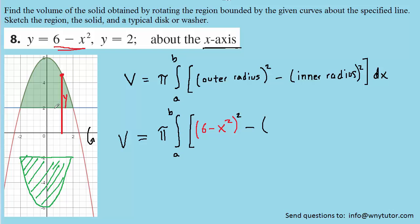Now for the inner radius, we take the curve that is below the outer curve, so that would be the line y equals two. We can mark any point on that curve, maybe about right there, and once again, we want to measure a distance from that point to the axis that we are revolving around.